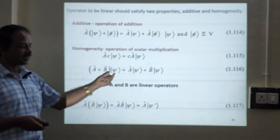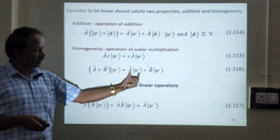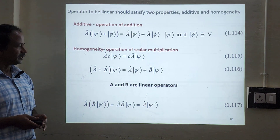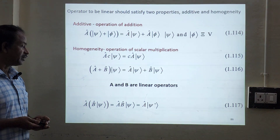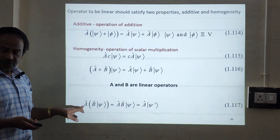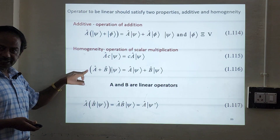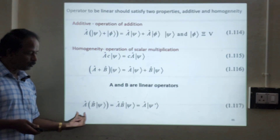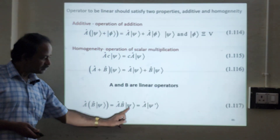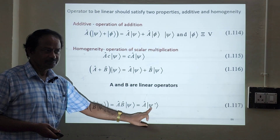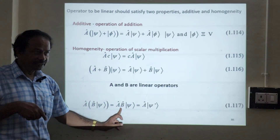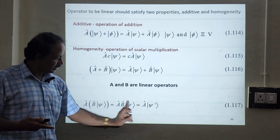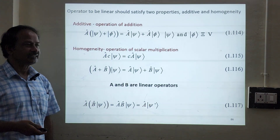Similarly for addition: A plus B acting on psi can be written as A operator operating on psi plus B operator operating on psi. So we can say that A and B are linear operators. And for multiplication, A times B with psi: we can write B acting on psi will give you psi dash, and then A acting on psi dash.